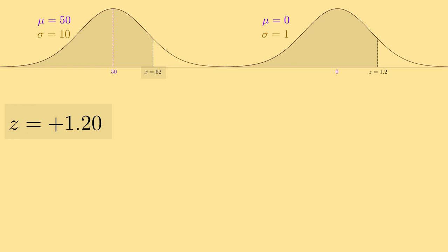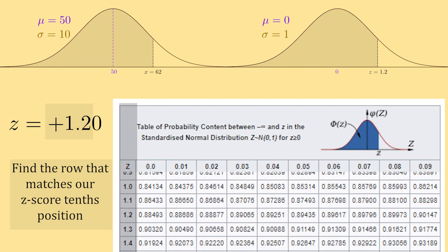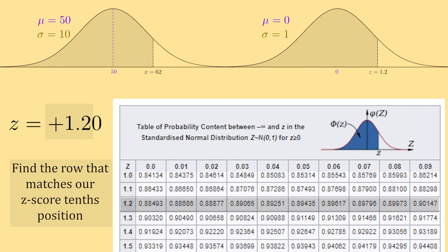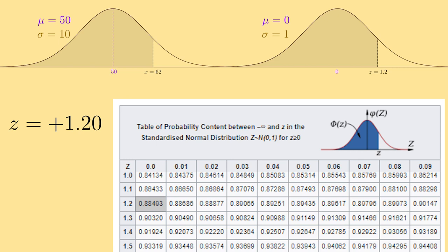Since my z-score is positive, I'll use the positive z-table here. I look down the left side for 1.2, which gives me this row. Our answer will be somewhere in this row. Then I look down the columns until I get to 0.00, so I get the first column, and the answer will be at the intersection of the highlighted row and column, which will be 0.88493. This tells me that 88.49% of the standard normal distribution falls below z equals 1.2.